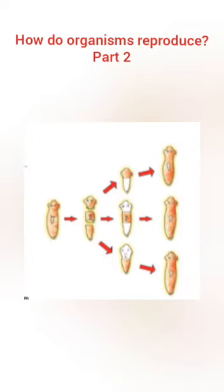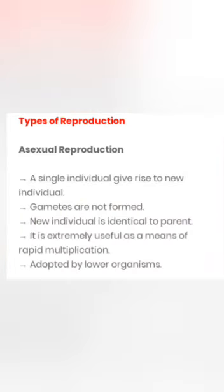Hello children. In this video, I am going to discuss about types of reproduction. We know that there are two types of reproduction: asexual and sexual reproduction.